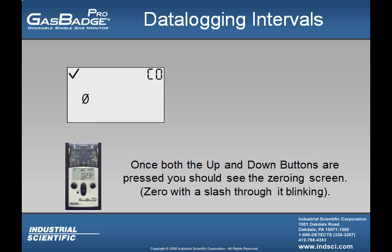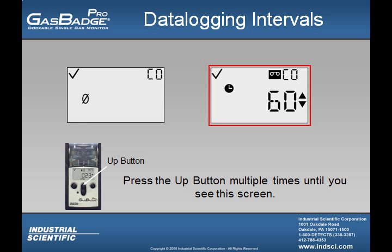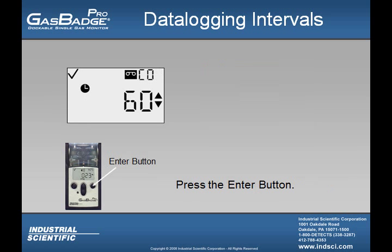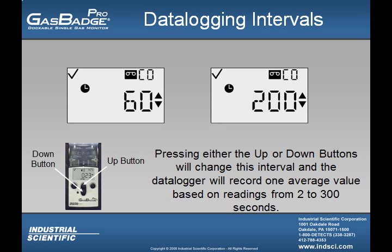As soon as the user is in the configuration menu, the first thing they should see is the zero with a slash icon blinking. The user must press the up button multiple times until they see the cassette tape icon just like the one shown on the right. After the user sees this icon, they must press the enter button. Once they press the enter button, they will see the numbers start to flash. The user can then press the up or down buttons to change this value anywhere from 2 to 300 seconds. This value reflects the amount of time the Gas Badge Pro will accumulate the average exposure data before writing it to the data logger.